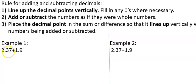So let's take a look at the first example, 2.37 plus 1.9. Notice the decimal points are lined up.